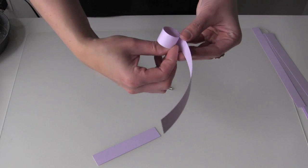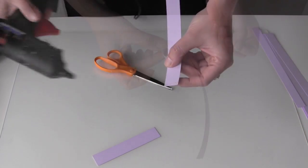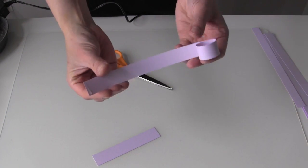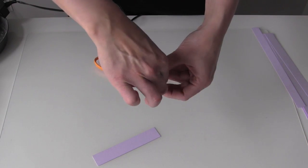For this one, I'm just going to do a small circle. And then I'm going to put glue on the end and curl it around to meet up with the other one.